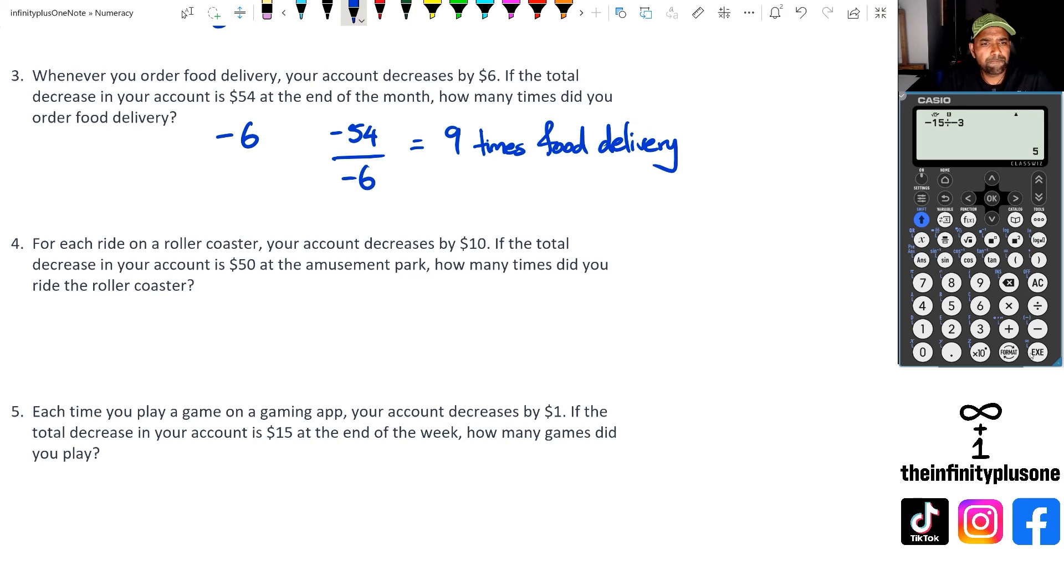Question four, account decreases by $10. Total decrease in your account is 50. We can do the other way. So we're going to go 50 divided by 10, which gives us five rides on the roller coaster.